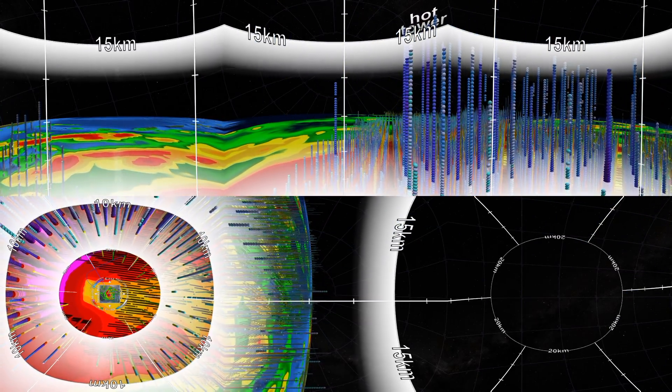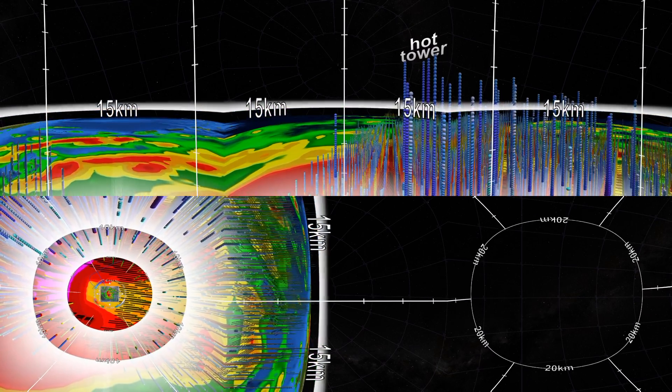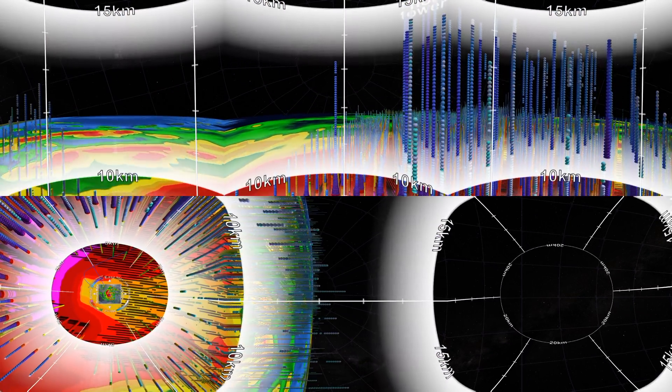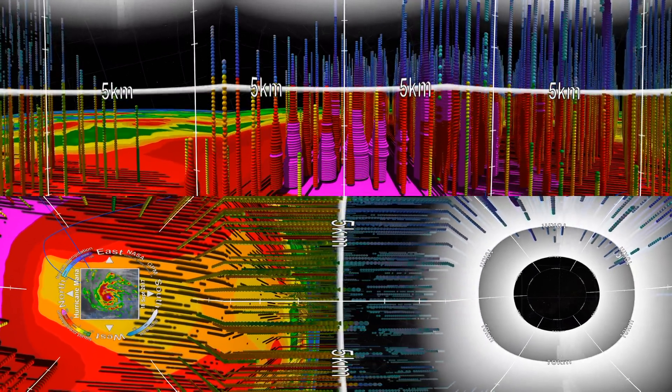Here's another hot tower that's about 17 kilometers tall. Hot towers often appear near the eye wall, a ring of heavy wind and rainfall surrounding the center of the storm.